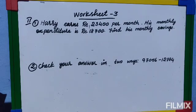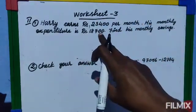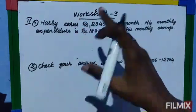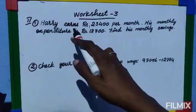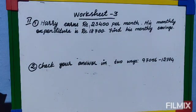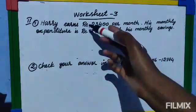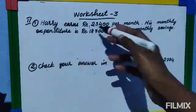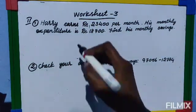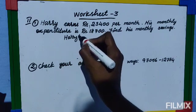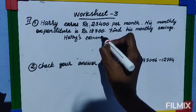In this second part, we are going to learn Roman number two. First problem: Hari earns rupees 23,400 per month and his monthly expenditure is rupees 18,700. Find his monthly savings. The keywords 'earns' and 'expenditure' are opposite words, just like 'buy' and 'sell', which means you have to subtract.